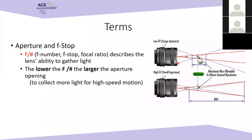Here's what's happening behind the scenes: with a large aperture opening, the angle of incoming light rays is steeper, so the in-focus zone between the red lines is shorter. With a small opening, the angle is shallower, so the camera stays in focus over a longer range — that's the deeper depth of field.